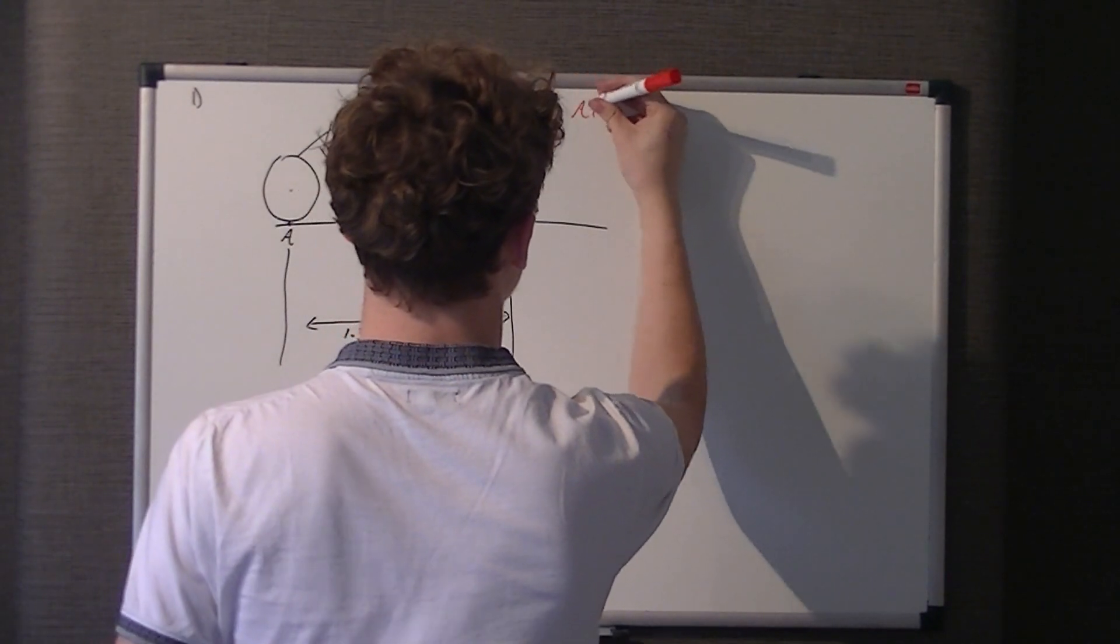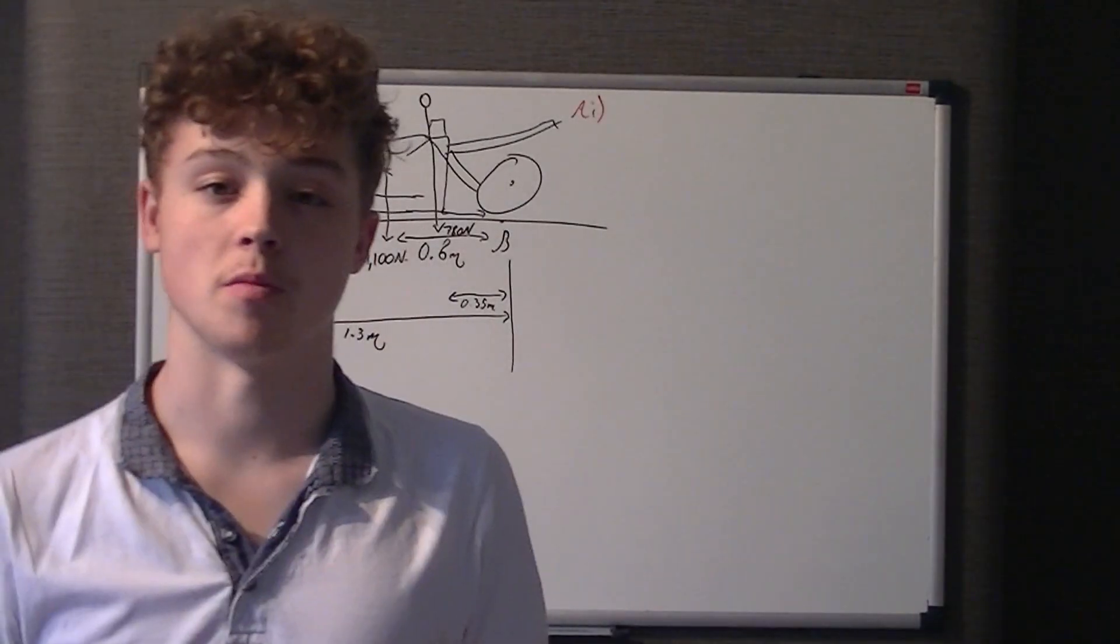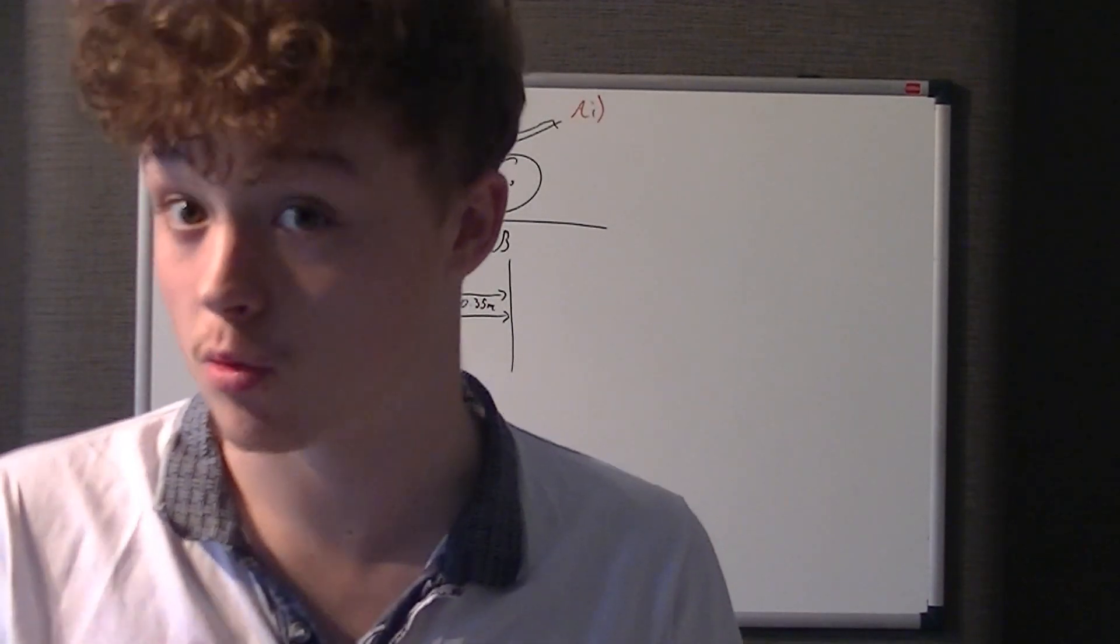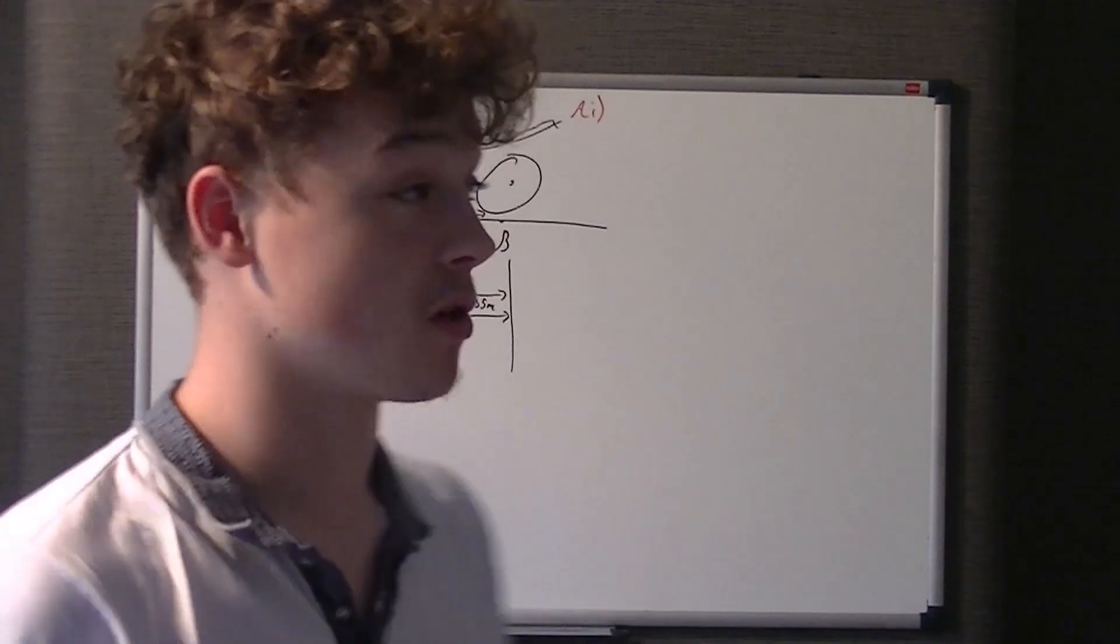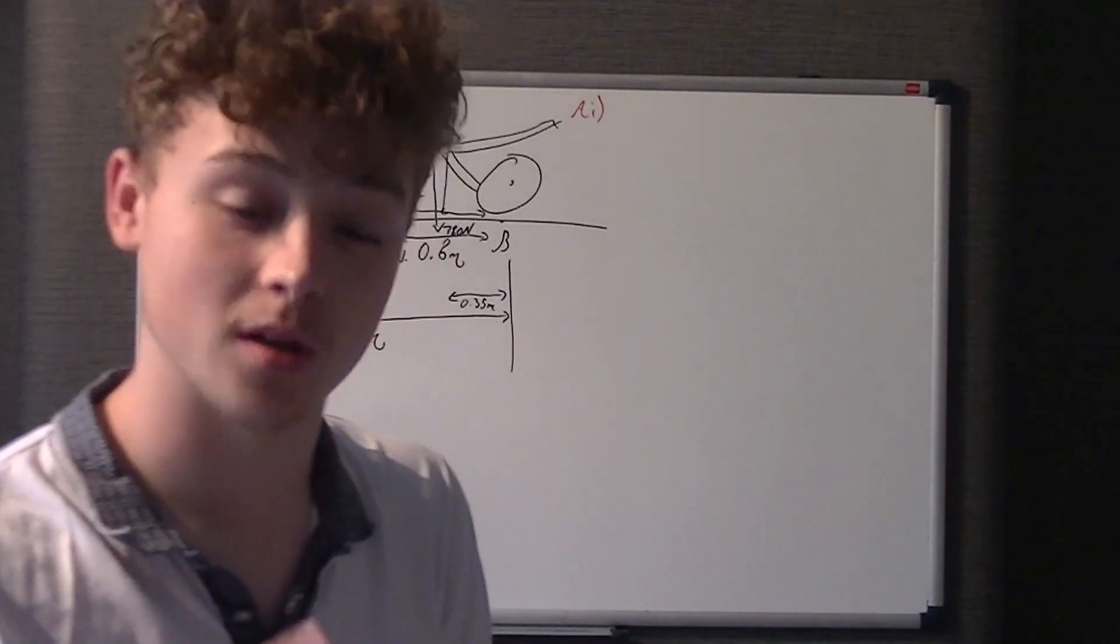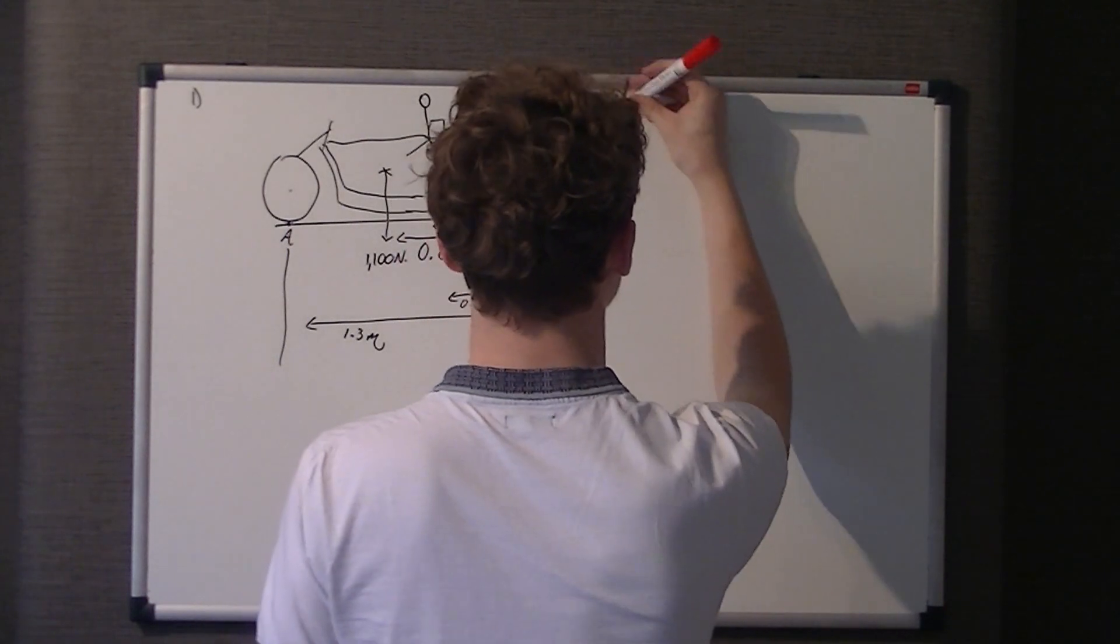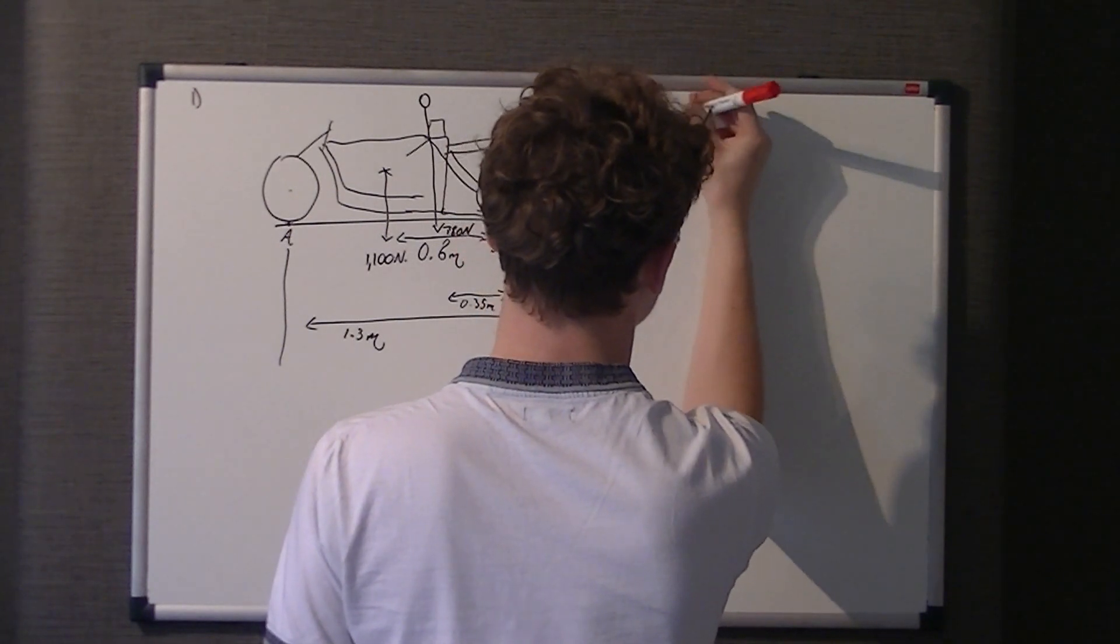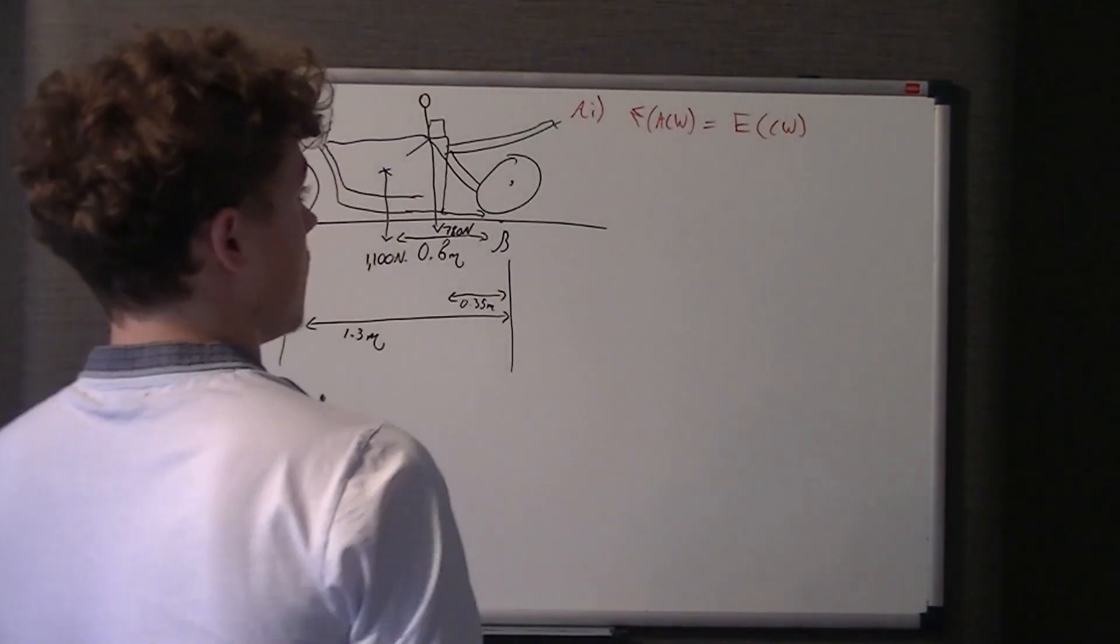So, 1A part 1. It asks us, just 1A, it says, state the principle of moments. Now, I'm not going to write this down because I'm quite lazy. But the gist of it is, there's a specific definition you need to know. It's that for an object in equilibrium, the sum of the anti-clockwise moments equals the sum of the clockwise moments. So, I'll just put that in brief note form.